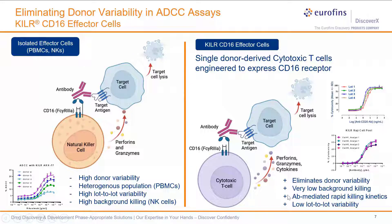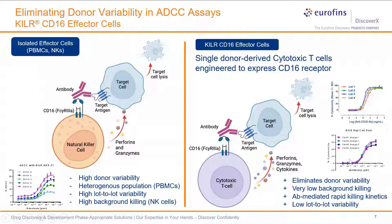Importantly, this eliminates the most challenging aspect of using primary cells — donor-to-donor variability. We can manufacture these cells very routinely and robustly, achieving very low lot-to-lot variability, lower than what we would see between multiple donors. We also get typically very low background killing with most cell models evaluated, very rapid killing kinetics, and very low analyst-to-analyst variability with these effectors.